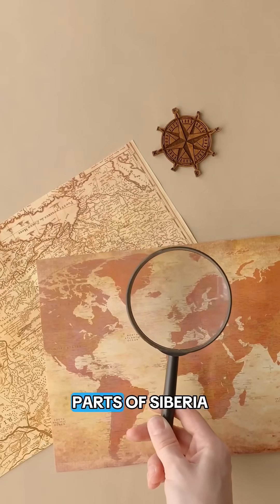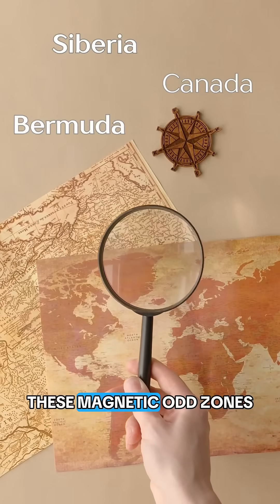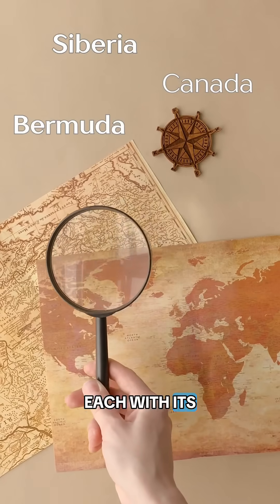Some regions, like parts of Siberia, northern Canada, and the Bermuda area, are known for these magnetic odd zones, each with its own unique signature.